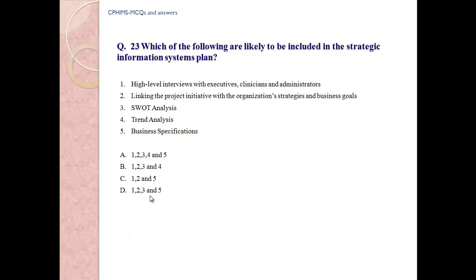Question number 23: Which of the following are likely to be included in a strategic information system plan? 1) High-level interviews with executives, clinicians, and administrators. 2) Linking project initiatives with organizational strategies and business goals. 3) SWOT analysis. 4) Trend analysis. 5) Business specifications. Options: A) 1-2-3-4-5, B) 1-2-3-4, C) 1-2-5, D) 1-2-3-5.